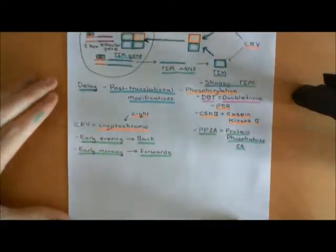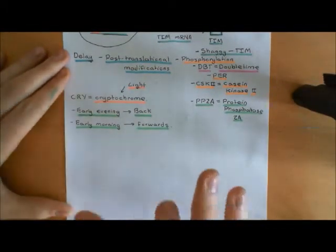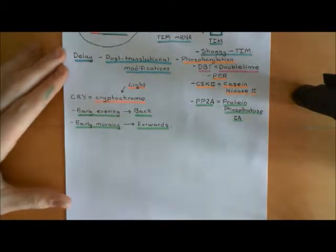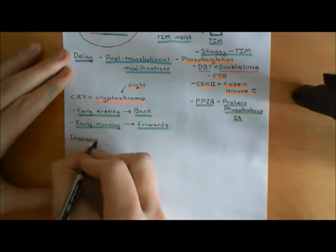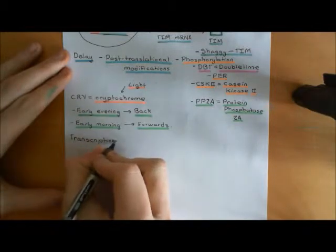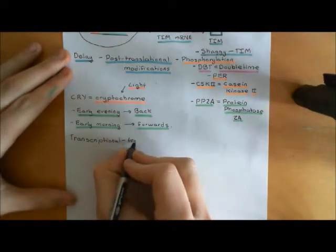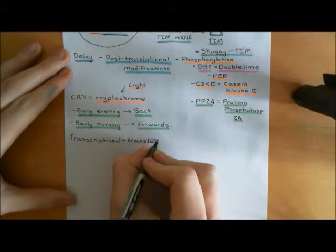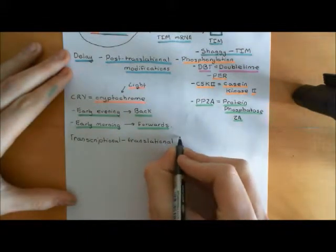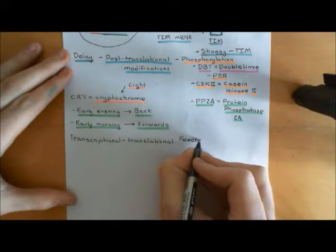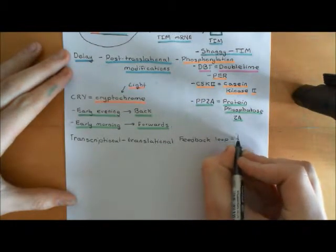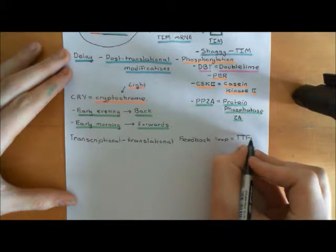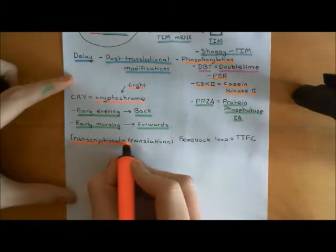There's a very important piece of terminology that describes this sort of system: the transcriptional-translational feedback loop. This circadian clock we've just seen in Drosophila melanogaster is an example of a transcriptional-translational feedback loop, and the mammalian clock system we're about to see is also going to be an example of a transcriptional-translational feedback loop. For short, transcriptional-translational feedback loops are abbreviated down to TTFLs.